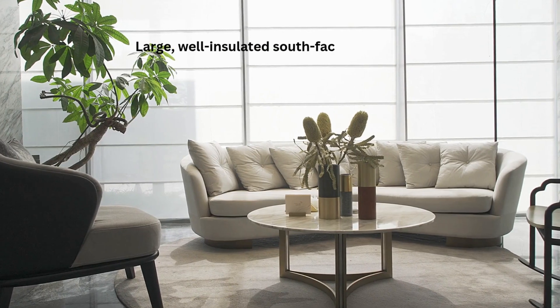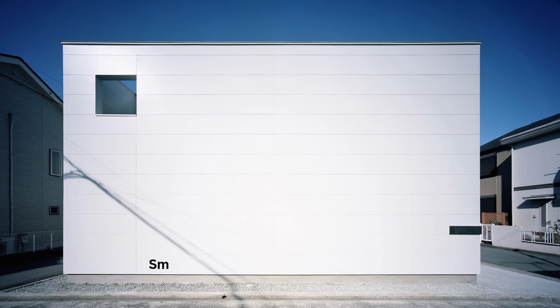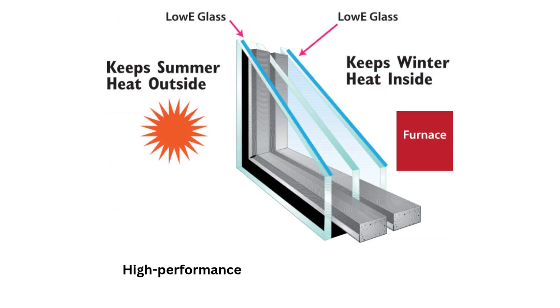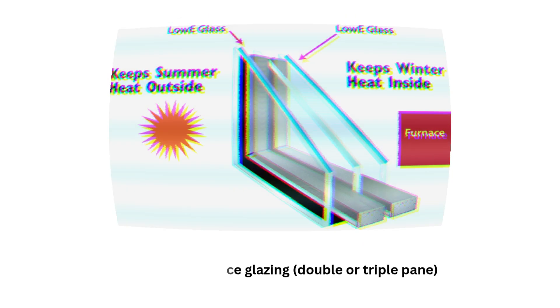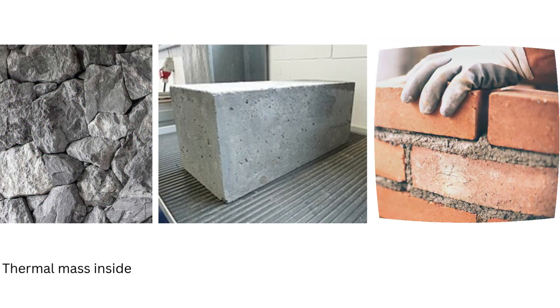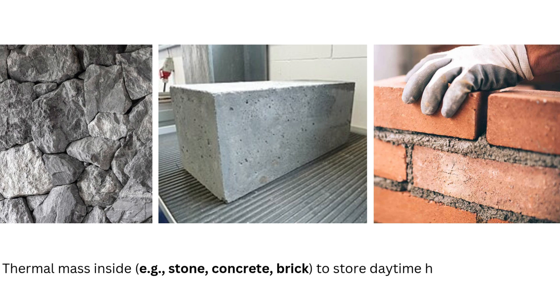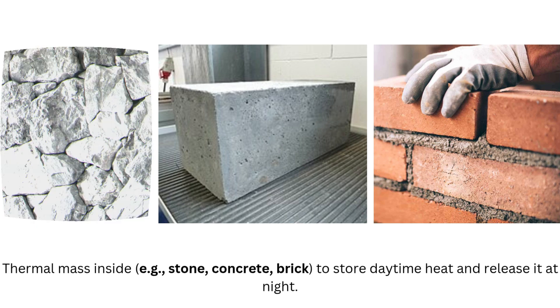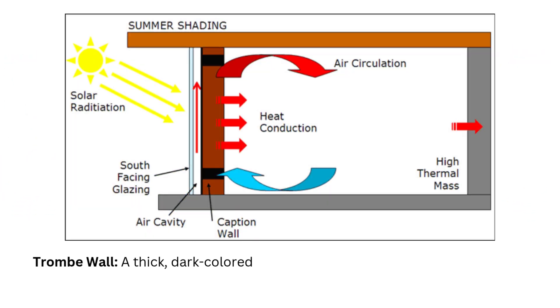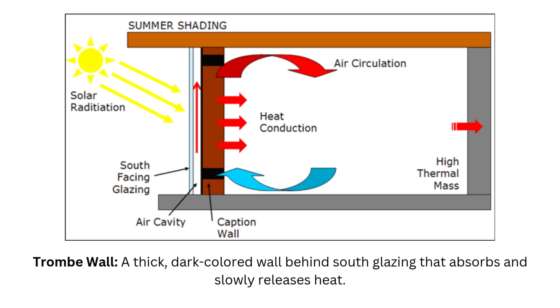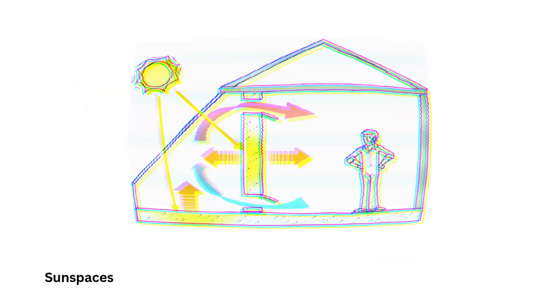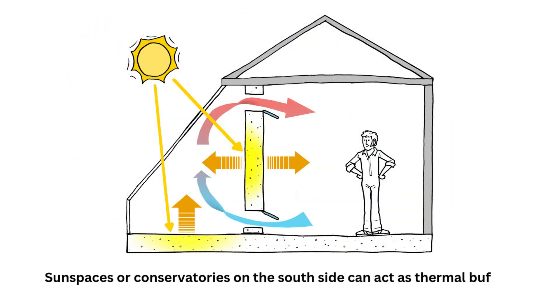Passive solar heating: the goal is to capture and store the sun's heat. Use large, well-insulated south-facing windows and small or no windows on the north facade. High-performance glazing — double or triple pane — is recommended. Thermal mass inside, such as stone, concrete, or brick, stores daytime heat and releases it at night. A Trombe wall — a thick, dark-colored wall behind south glazing — absorbs and slowly releases heat. Sun spaces or conservatories on the south side can also act as thermal buffers.